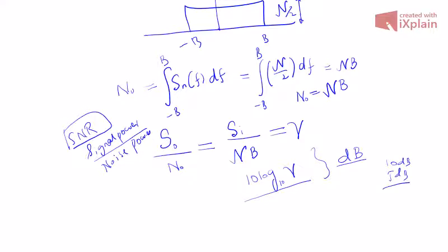Usually we take 10·log₁₀(γ) to specify the SNR in decibels. You might have heard of 10 dB SNR or 5 dB SNR — these figures come up very frequently in the design of communication systems. Our next lectures will cover the analysis of AM in the presence of noise, single sideband in noise, and FM in the presence of noise, followed by a lecture on superheterodyne receivers.